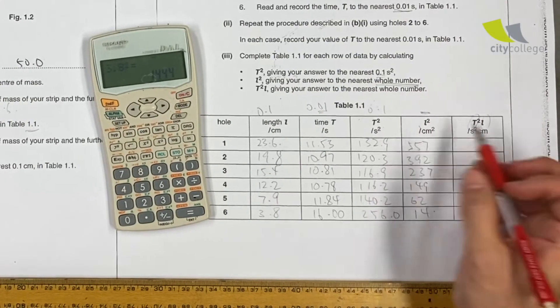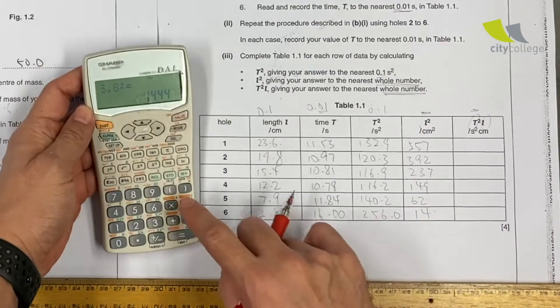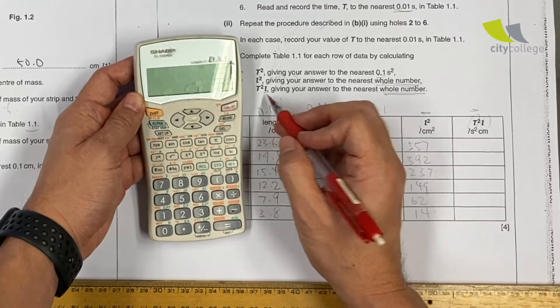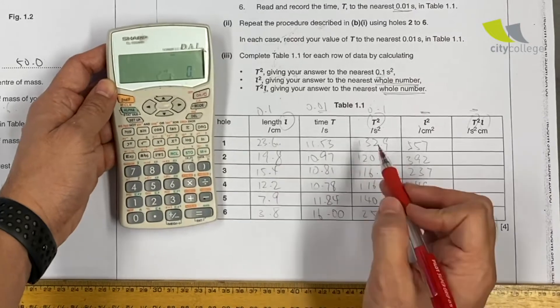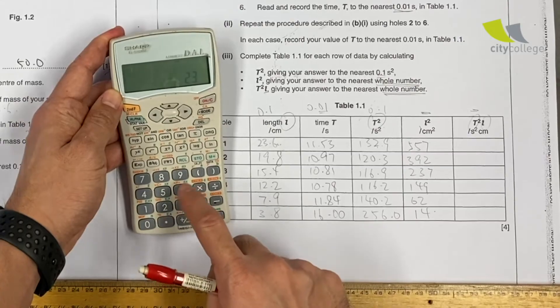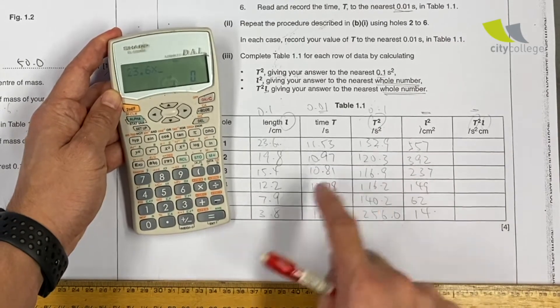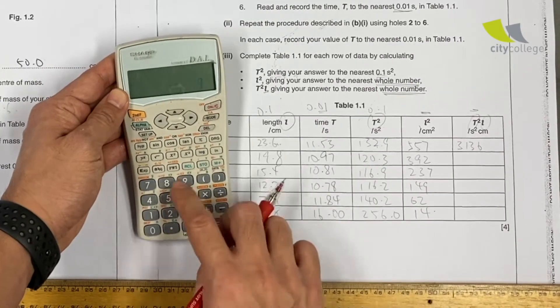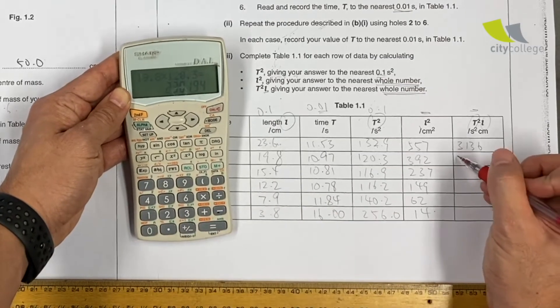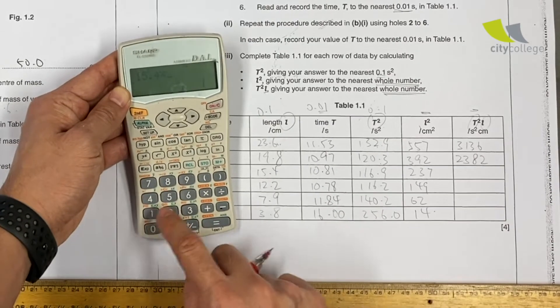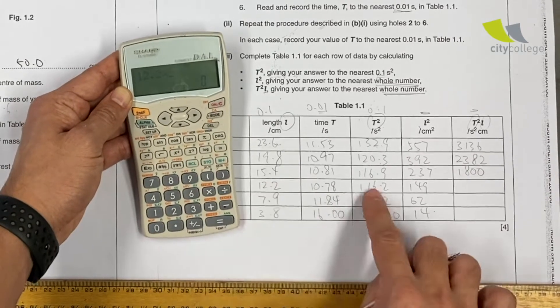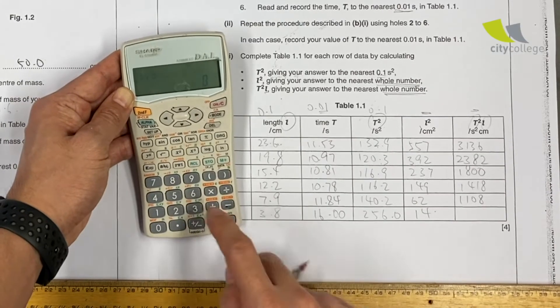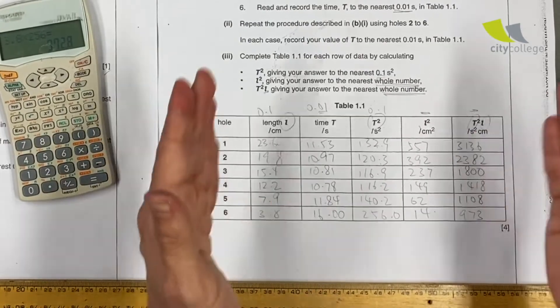T squared divided by L? Oh, T squared times L. Thank you, my little L for telling me. It's T squared times L, not even L squared. Almost got me. So it's this and this, this one and this one. 23.6 times 132.9 is 3136. 19.8 times 120.3 is 2382. 15.4 times 116.9 is 1800. 12.2 times 116.2 is 1418. 7.9 times 140.2 is 1108. 3.8 times 256 is 973. So I got everything right. And the next video will draw the graph.